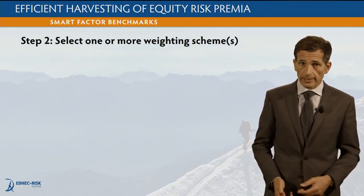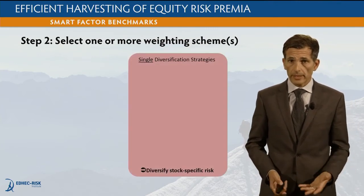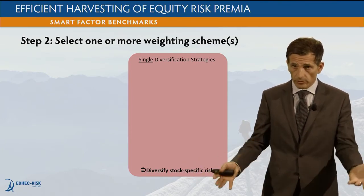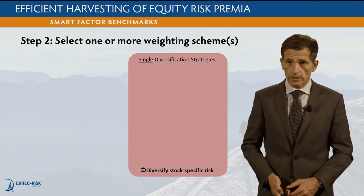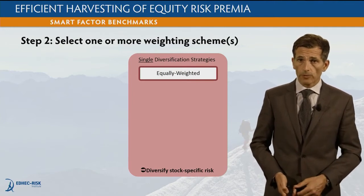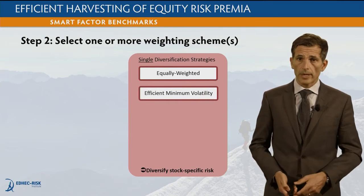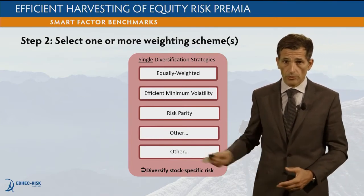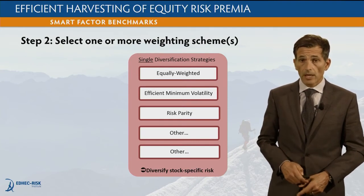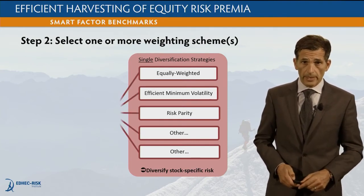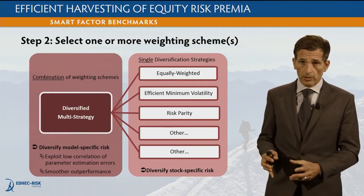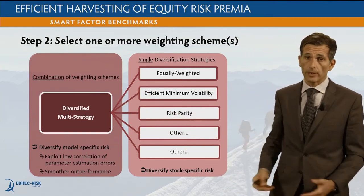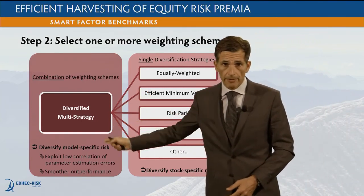Step number two: you select a weighting scheme — some kind of diversification strategy to diversify away stock-specific risk, which is unrewarded and therefore unneeded. You could use an equally weighted portfolio, a minimum volatility weighting scheme, a risk parity weighting scheme, or other schemes that diversify away specific risk. What you could also do is diversify away all risks involved in choosing the best weighting scheme by holding a combination of those four or five weighting schemes — what we call a diversified multi-strategy — which provides smoother outperformance by diversifying across the market conditions under which each weighting scheme tends to dominate.